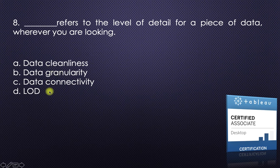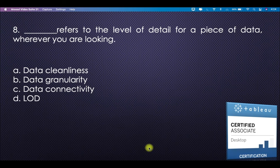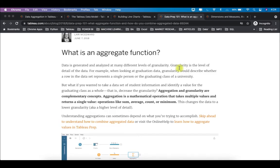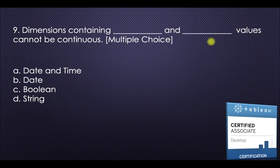Question eight: dash refers to the level of detail for a piece of data wherever you are looking. Data granularity refers to the level of detail for a piece of data — confirmed on help.tableau.com, which states 'data is generated and analyzed at many different levels of granularity'. So the answer is data granularity.